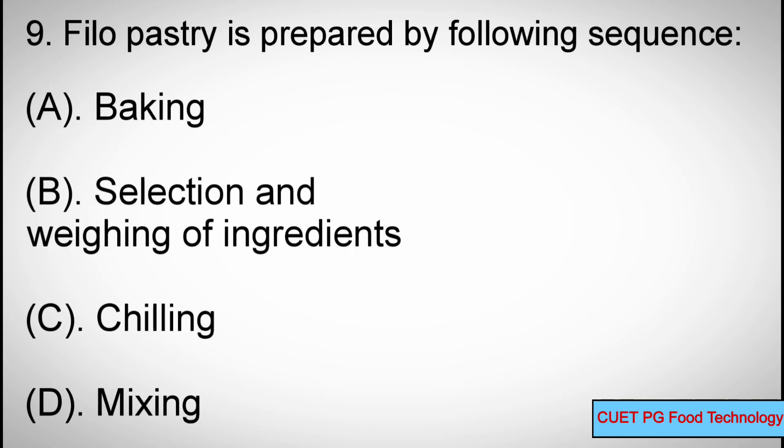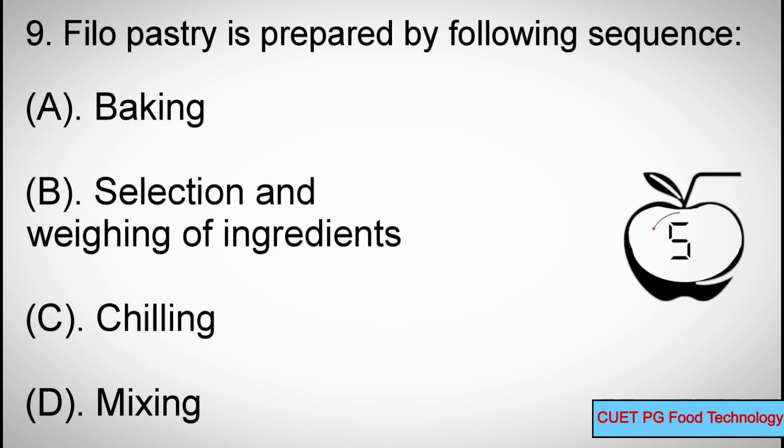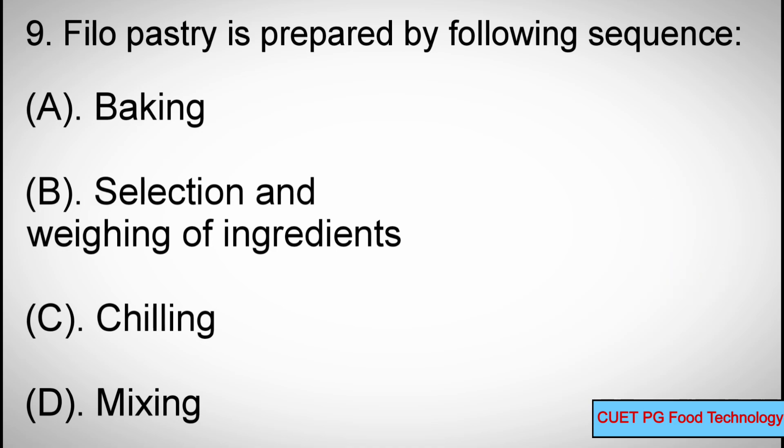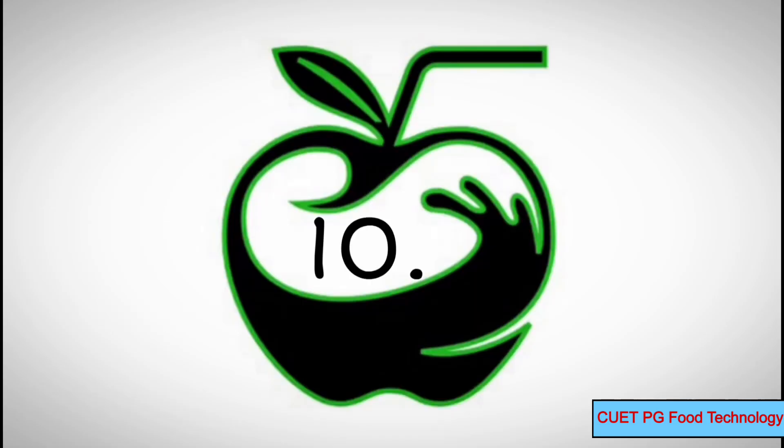Question number nine: Filo pastry is prepared by the following sequence — options: A) Baking, B) Selection and weighing of ingredients, C) Chilling, D) Mixing. The correct sequence is: Selection and weighing of ingredients, then Chilling, then Mixing, and finally Baking.